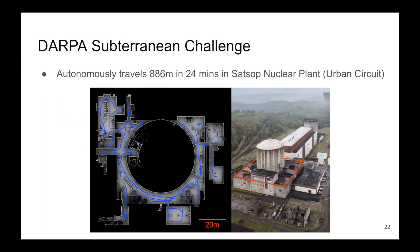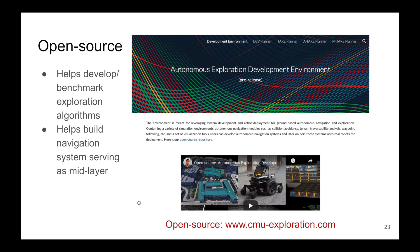This work is currently being used by the CMU OSU team in attending the DARPA Subterranean Challenge. The final event will be held in September this year in Louisville, Kentucky. Our software code will be publicly available. In addition to open-sourcing the Exploration Planner, we have released what we call the Autonomous Exploration Development Environment, which includes multiple representative simulation environments, basic navigation modules such as collision avoidance, terrain traversability analysis, path following, and a set of visualization tools. This environment is meant to be a platform for benchmarking and for real robot system integration.